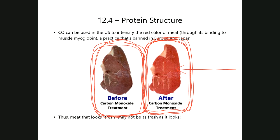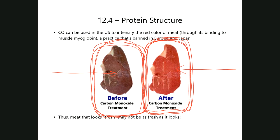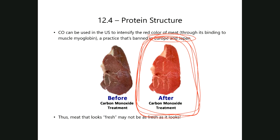If you don't treat meat with carbon monoxide, it turns out the meat has what some people may see as a less appealing color. Just because your meat is nice and red doesn't necessarily mean it's fresh. The practice of treating meat with carbon monoxide has actually been banned in Europe and Japan, but not so much in the United States. When looking at meat on a shelf, never mind the color — what truly tells you how fresh that meat is is the date.